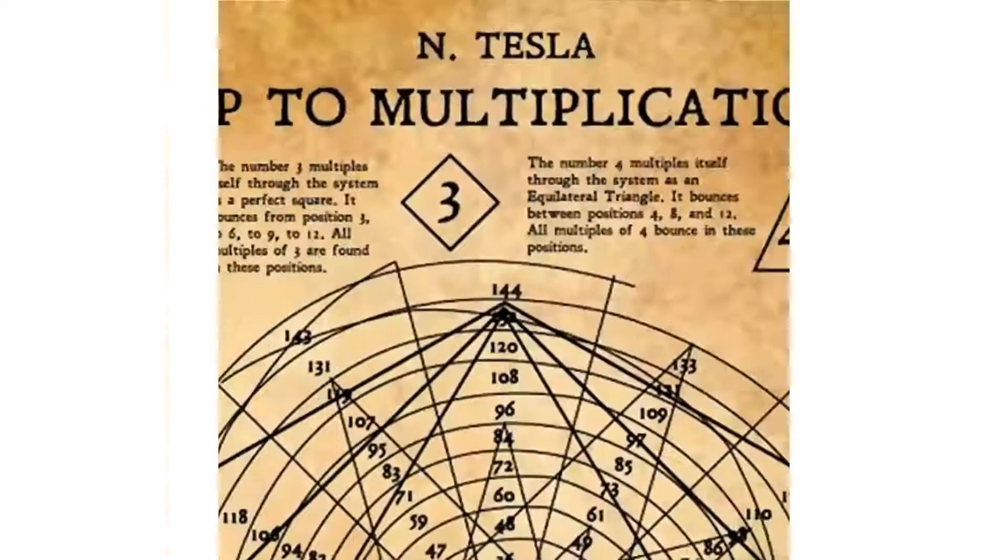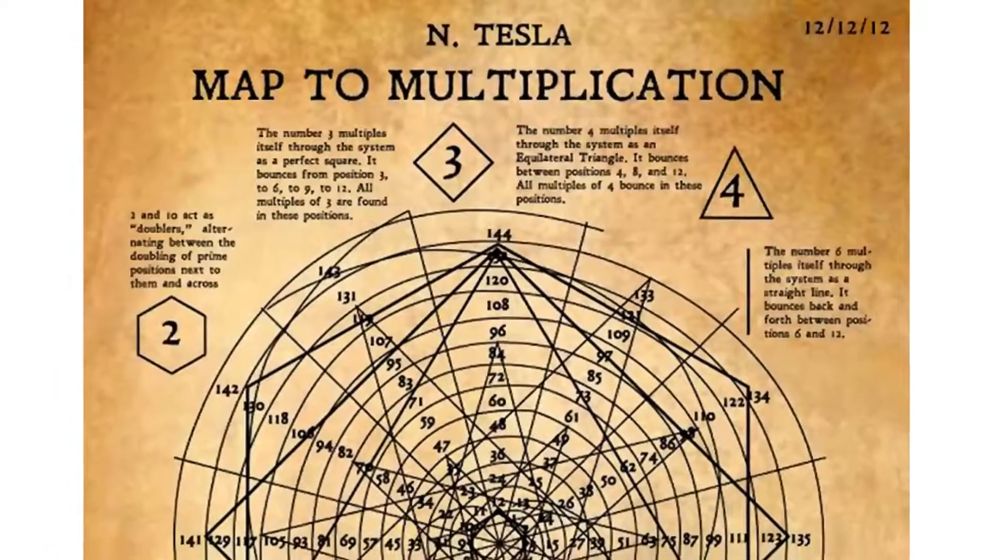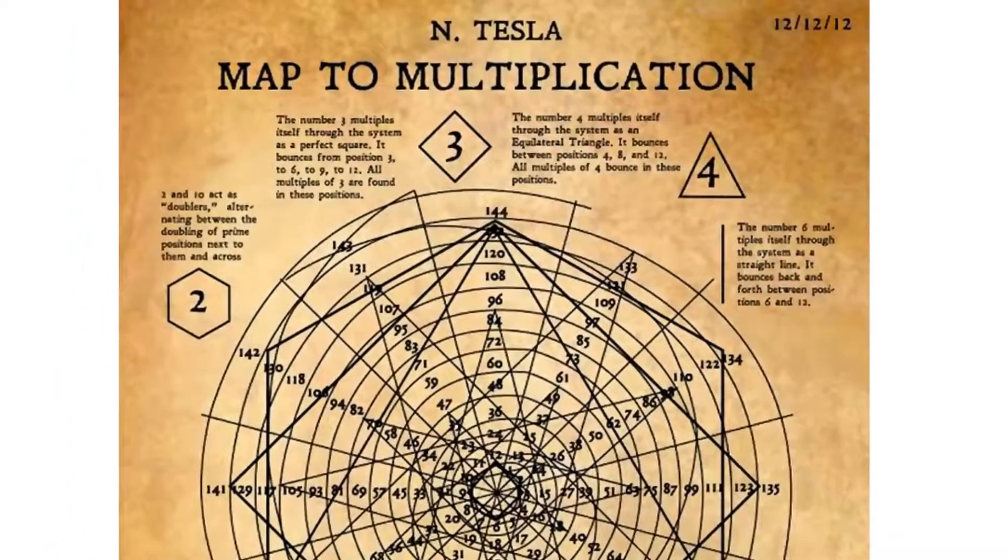Some of the pieces are already familiar to the public, but a few others are not. Most notably is the map to multiplication or the math spiral.